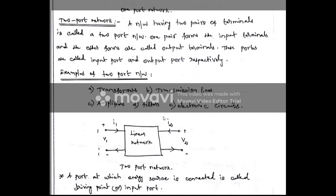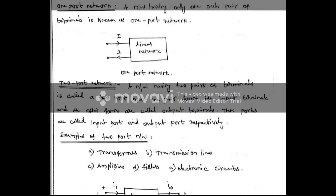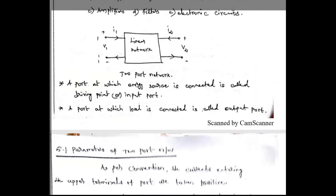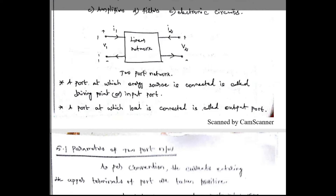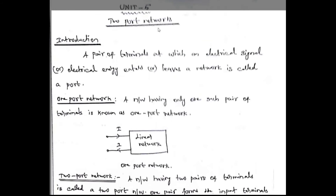Examples of two-port networks include transformers, transmission lines, amplifiers, filters, and electronic circuits. If a network has more than two ports — three, four, five ports, etc. — it is called a multi-port network. Microwave components such as circulators are examples of multi-port networks.